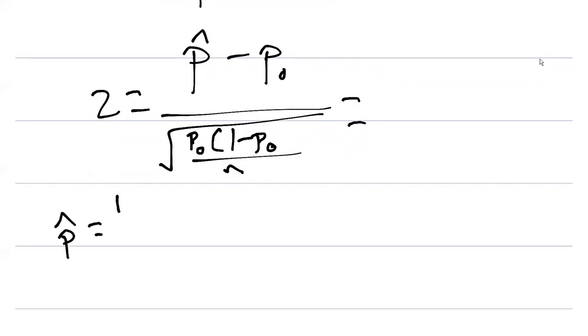Remember we sampled 35 farmers, but 18 of them said that they supported the rule. And so P hat here in this problem is going to be 0.51.